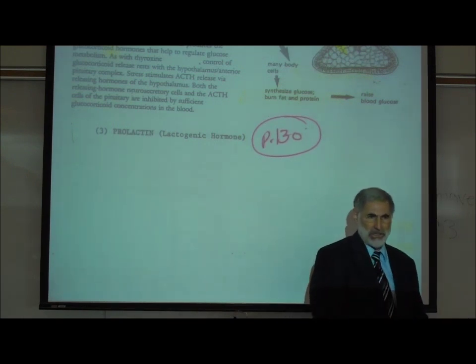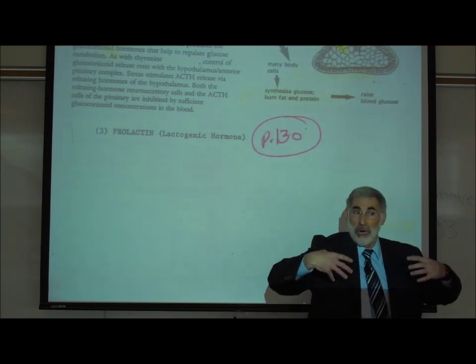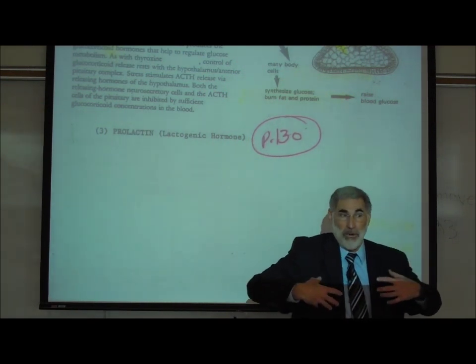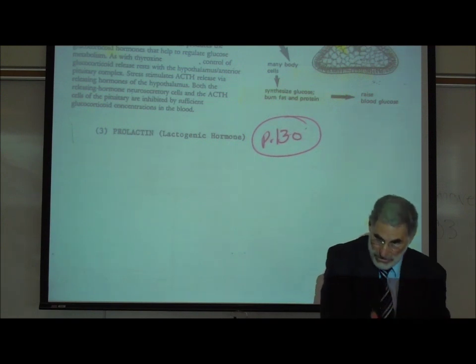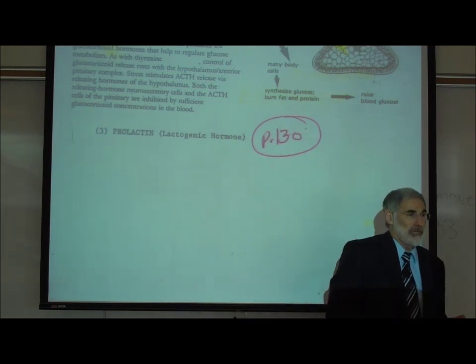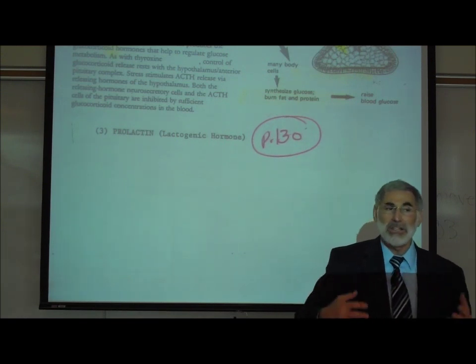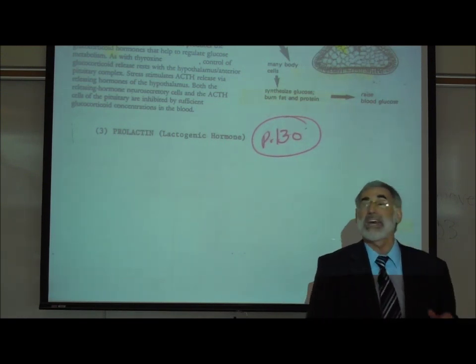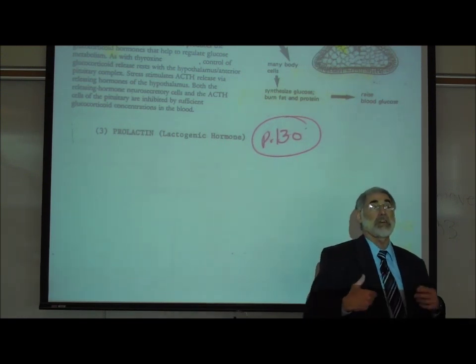Milk let down? It causes the milk or whatever fluid is in the mammary glands to squirt out, to come out. It doesn't cause the production of the milk. So prolactin causes the milk to be produced and oxytocin causes it to come out.